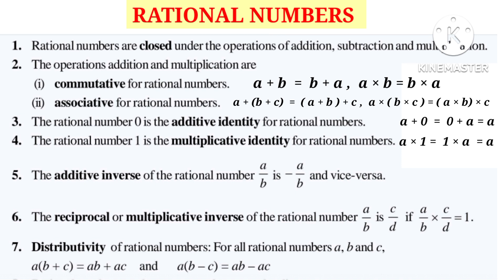The additive inverse of the rational number A by B is minus A by B, and the additive inverse of minus A by B is A by B. The reciprocal or multiplicative inverse of the rational number A by B is C by D, if A by B into C by D is equal to 1.